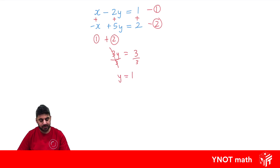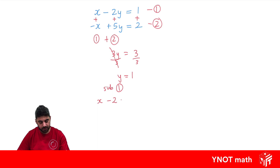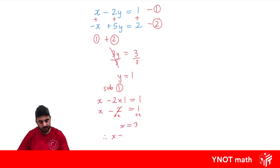Now we need to go ahead and substitute into any one of the equations to solve for x — it doesn't matter which one you pick. I'm going to sub it into equation 1 because it has smaller values. So we've got x minus 2 times y, which we now know is 1, equals 1. So minus 2 times 1 gives us minus 2. Now we add 2 to both sides, so x equals 3. Our conclusion statement: therefore, x equals 3 and y equals 1.